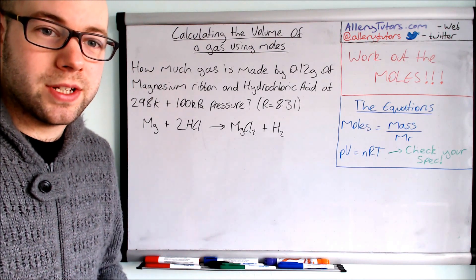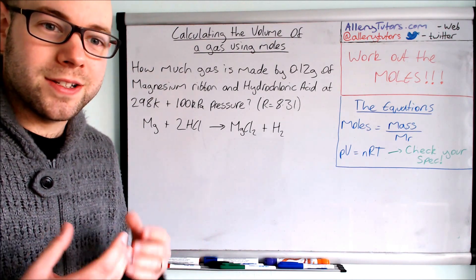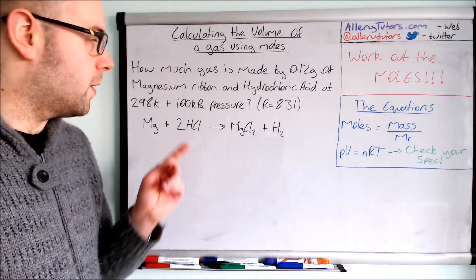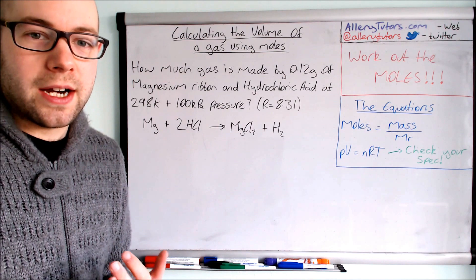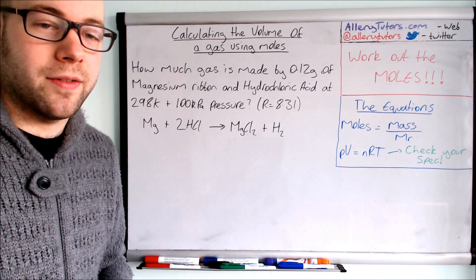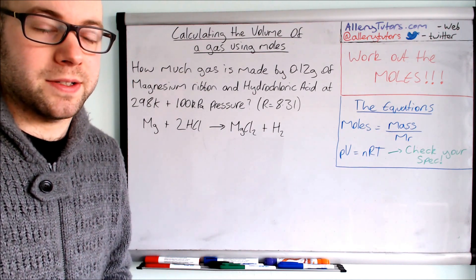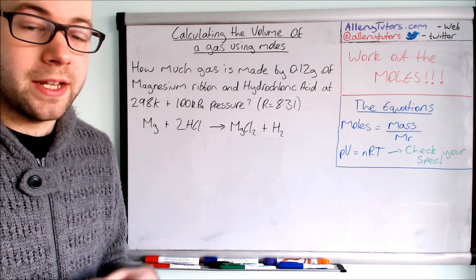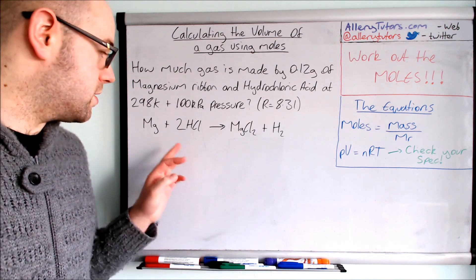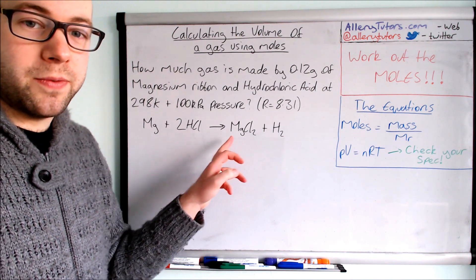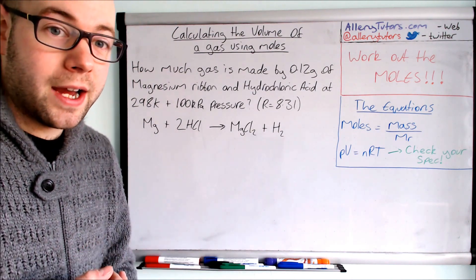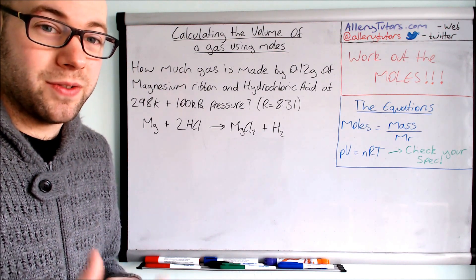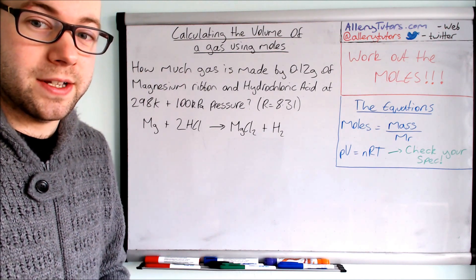So we're going to go through this question here. This question says how much gas is made by 0.12 grams of magnesium ribbon and hydrochloric acid at 298 Kelvin and 100 kilopascals of pressure and we have R to be 8.31. Now they've given us the equation here so this is magnesium plus 2HCl for magnesium chloride and hydrogen. So this is just literally an acid plus metal reaction and it will give your traditional salt and hydrogen gas as well.